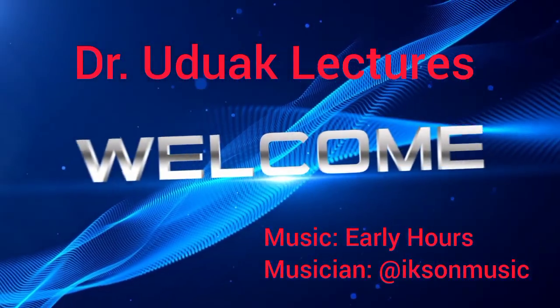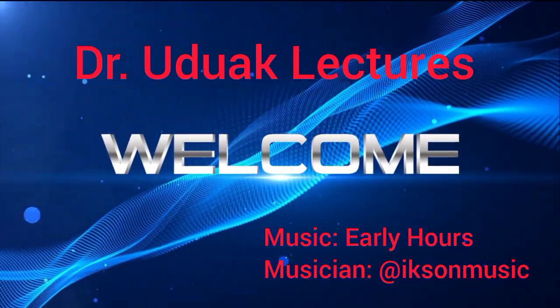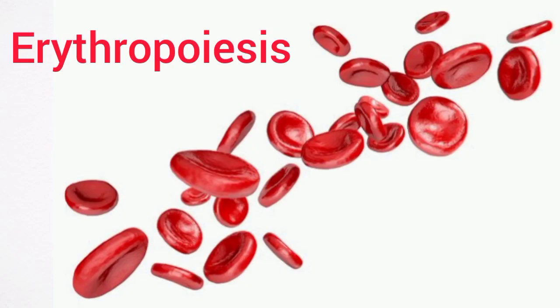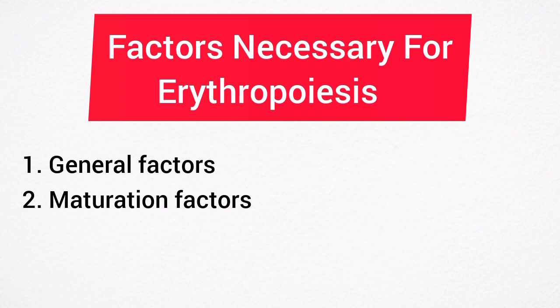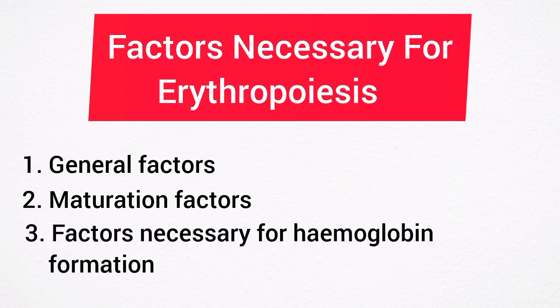Hi everyone, this is Dr. Uduak. Today we'll be talking about the factors that are necessary for erythropoiesis. There are several factors necessary for the development and maturation of erythrocytes. These factors are classified into three categories: number one, the general factors; number two, the maturation factors; and number three, the factors necessary for hemoglobin formation.